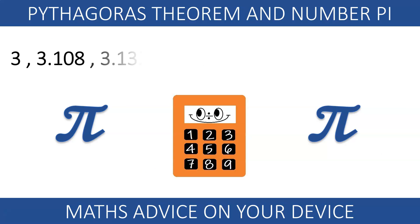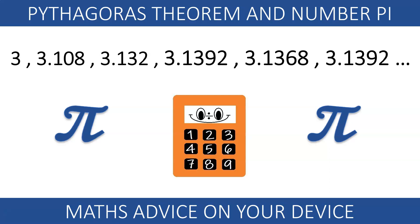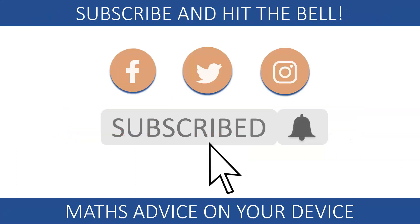Archimedes' method returns approximations for pi that converge to the actual value of the number pi. Very clever if we take into account the simplicity of the maths behind. If you enjoyed this video, subscribe to this channel and hit the notification bell to receive updates.